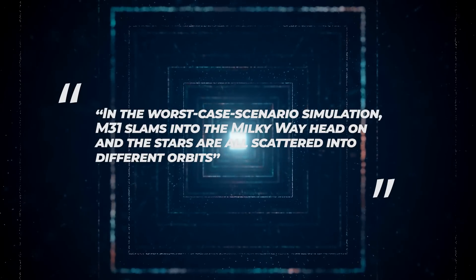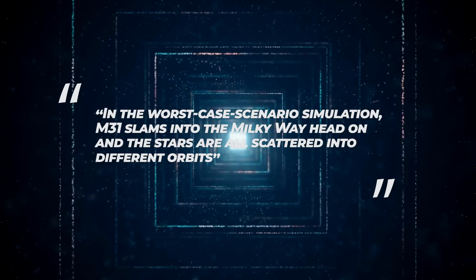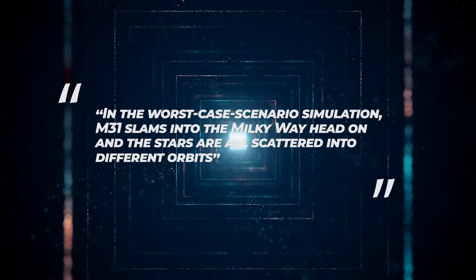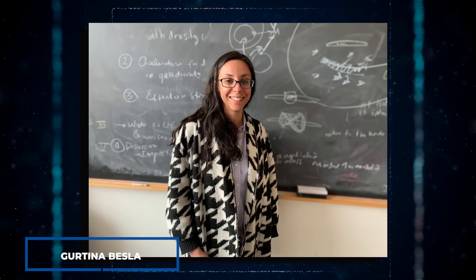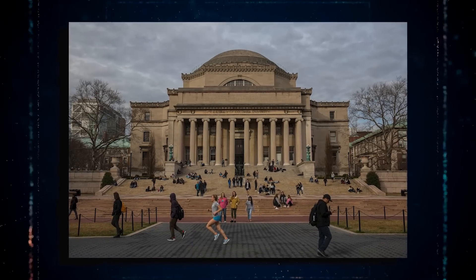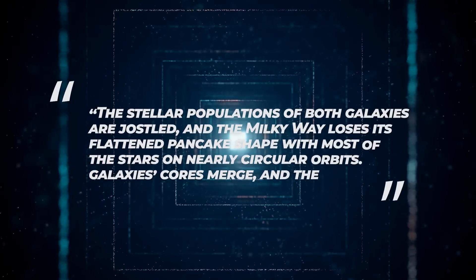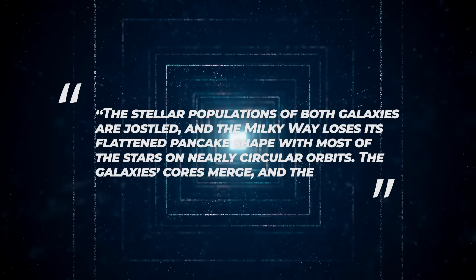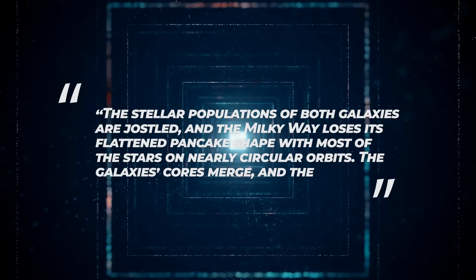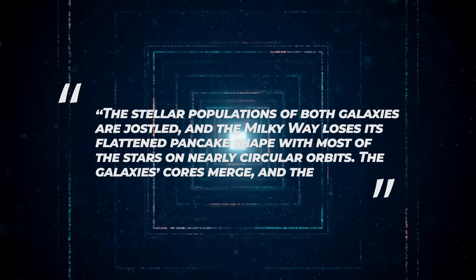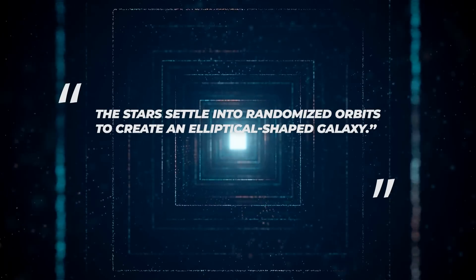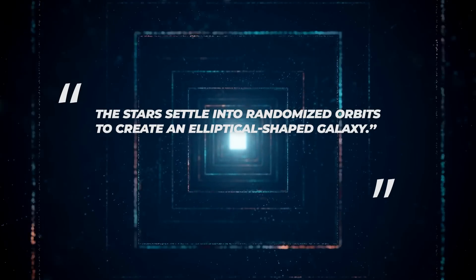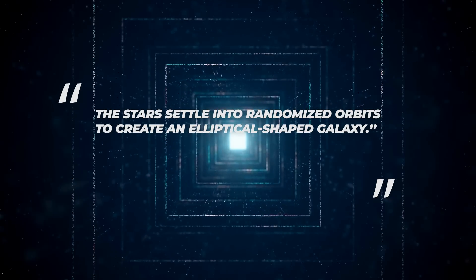and the stars are all scattered into different orbits, said Gertina Besler of Columbia University in New York. The stellar populations of both galaxies are jostled, and the Milky Way loses its flattened pancake shape with most of the stars on nearly circular orbits. The galaxies cores merge, and the stars settle into randomized orbits to create an elliptical-shaped galaxy.